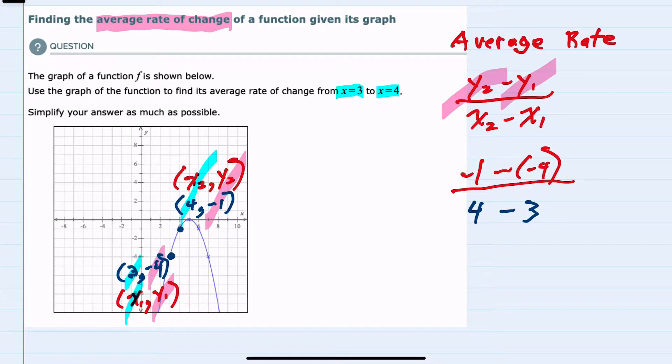From here I can simplify. In the numerator, -1 minus a negative 4—subtracting a negative is the same as adding a positive. When the signs are different between the -1 and 4, I would subtract and keep the sign of the larger, so I would have a positive 3 in the numerator.